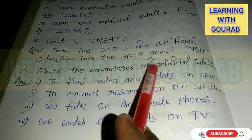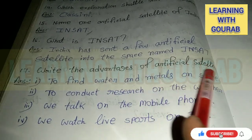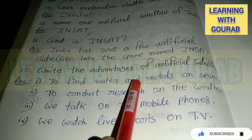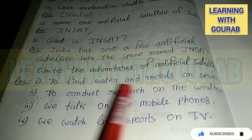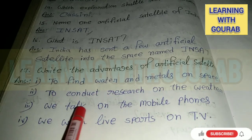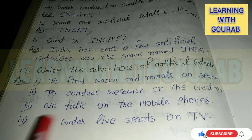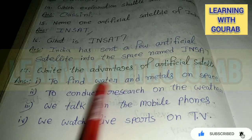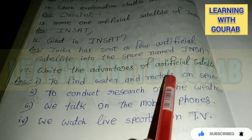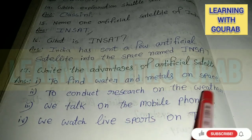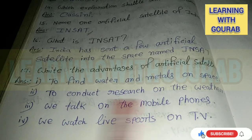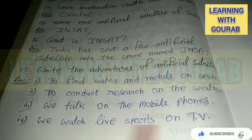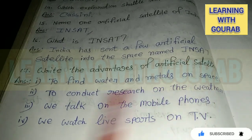Write the advantages of artificial satellites. Answer: To find water and metals in space; to conduct research on the weather; we can talk on mobile phones; we can watch live sports on TV. Remember, through artificial satellites we can find out if there is water or metal in space, we can do weather research, we can talk on mobiles, and we can watch live sports — all made possible by artificial satellites.